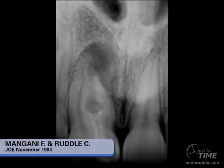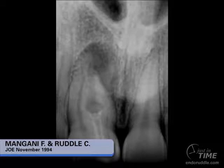Here's a case that was published in the Journal of Endodontics in 1994. This case was done by my friend Francesco Mangani, and you can see it's a very unusual central incisor. This right maxillary central incisor is dens invaginatus — it's a virgin tooth — but through the lingual groove, there was an ability for microorganisms to get into the pulp chamber, and you can see that there are multiple canals.